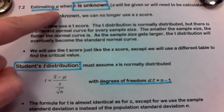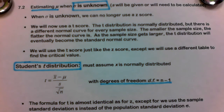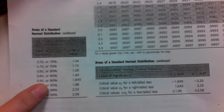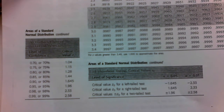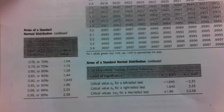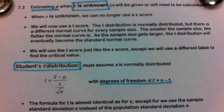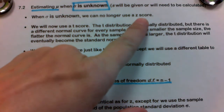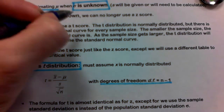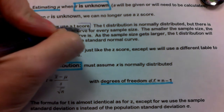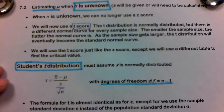When we estimated mu in 7.1, to find or calculate the margin of error, we used the Z sub C table, which we talked about in the last section. Now that sigma is unknown, we can no longer use the Z score. We have to use what is called a T score. So we switch from Z to T.